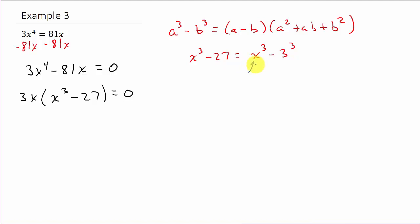Plugging into the difference of two cubes formula: drop the exponents to get the A minus B factor, which is x minus 3. Then square the first term, change the sign, multiply the two terms, and the last term is always positive — square the last term. I also have a video on factoring sum and difference of two cubes if you need to review that.